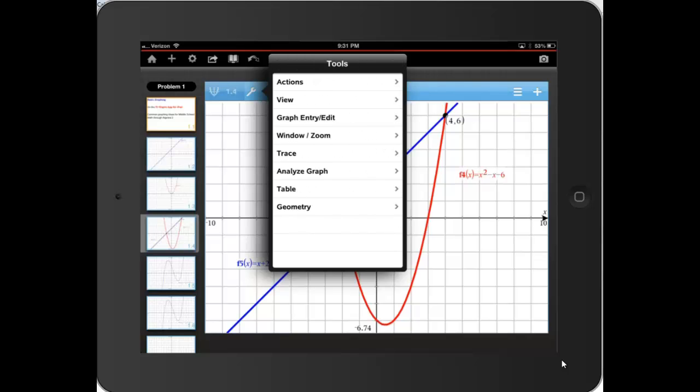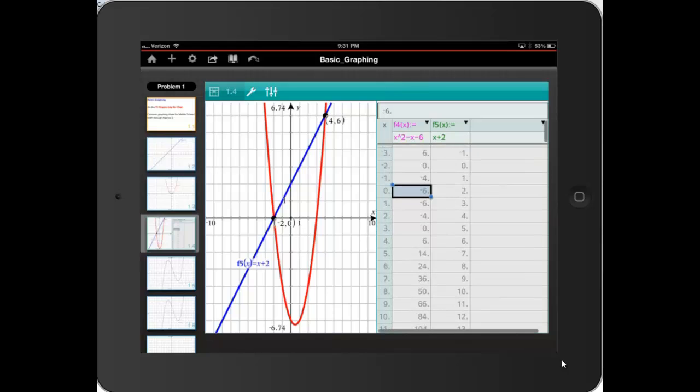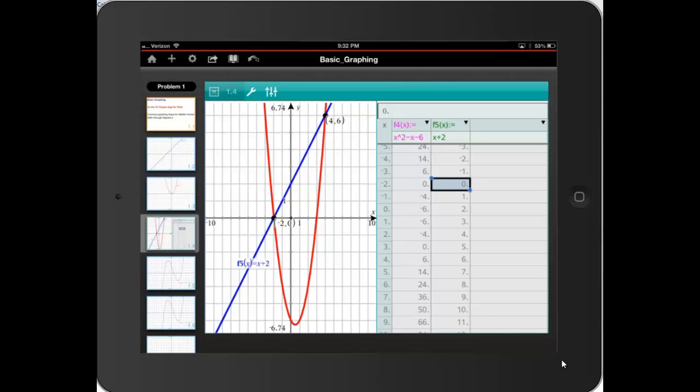I could also bring in the table to show that. So let's go back and see the table. And you can see that the y coordinates are the same when x is 4. And then also if I slide down the y coordinates are the same when x equals negative 2.